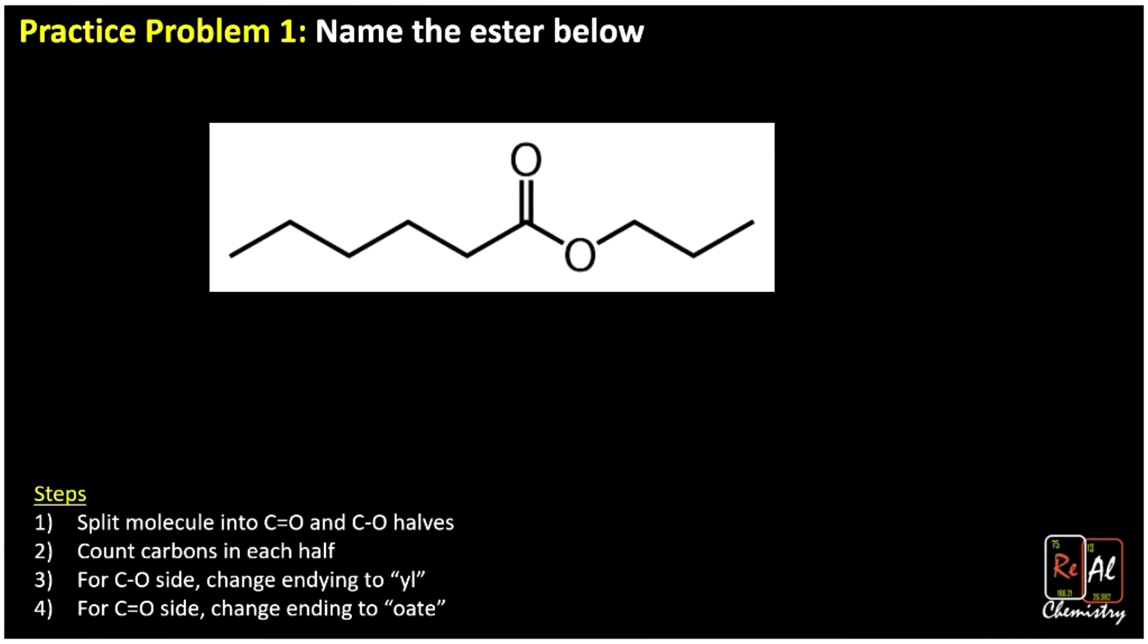Here we got an ester. And we're going to start by splitting the molecule in two. Notice here's our magic bond that we really want to focus on when we split it. And we're going to split it into our orange half and our yellow half. I think I switched the colors, but don't worry about that. We're just going to move on.